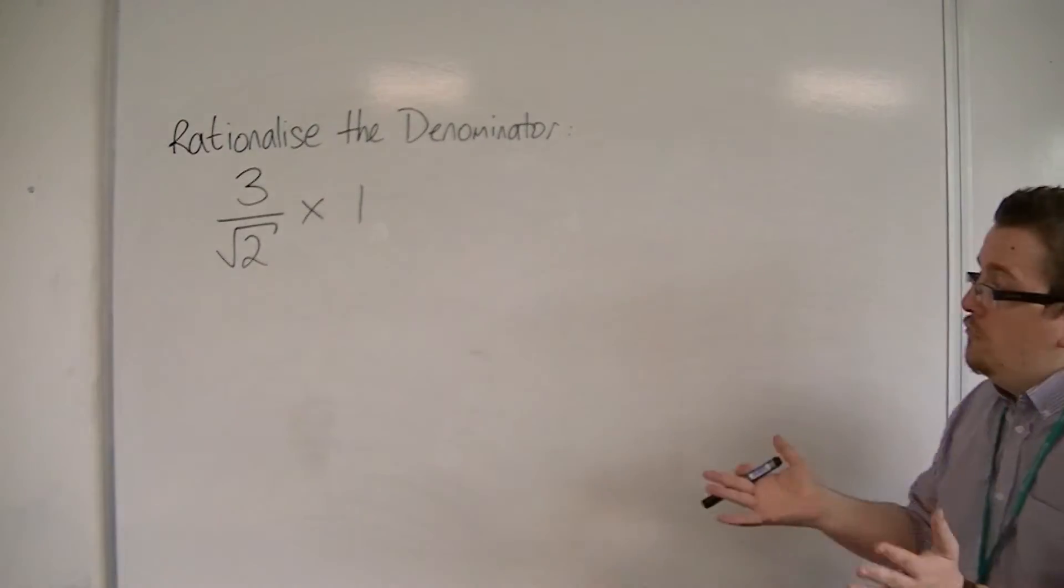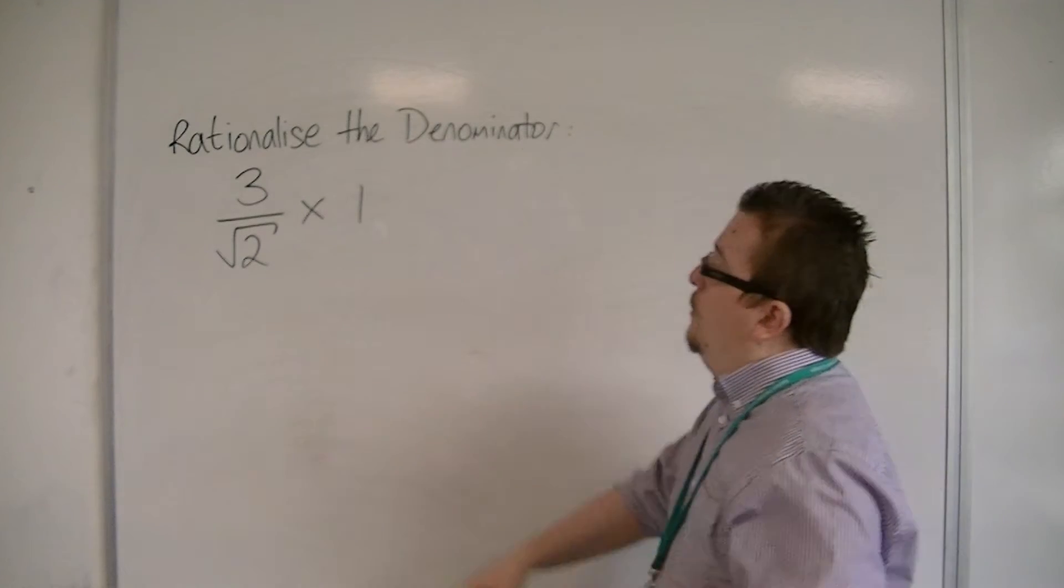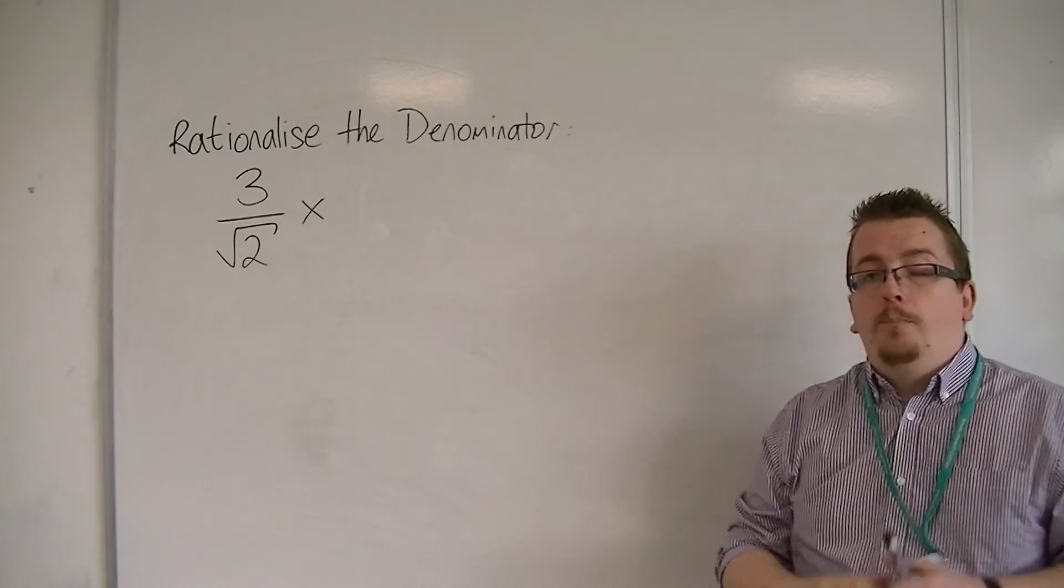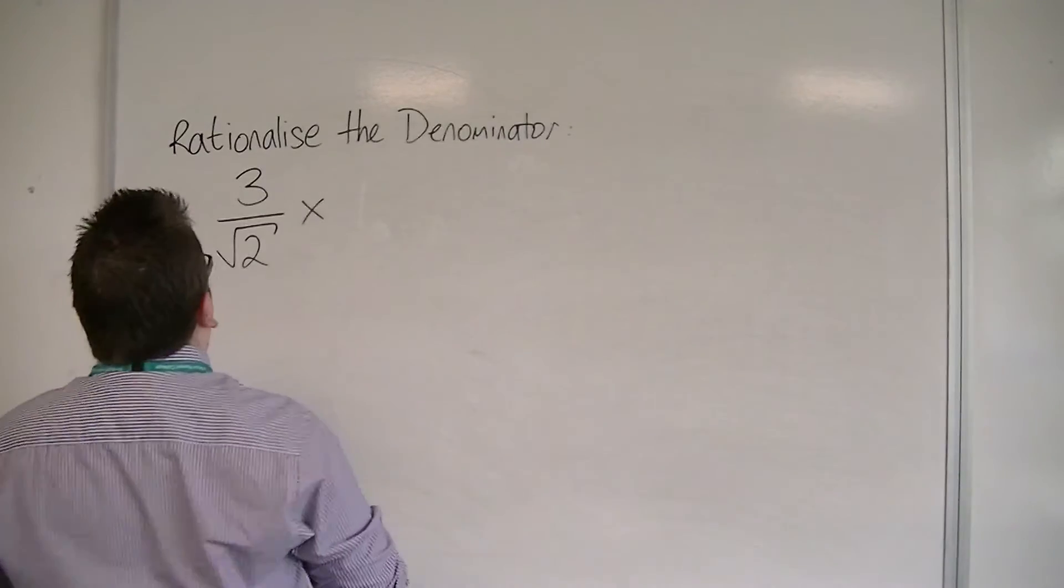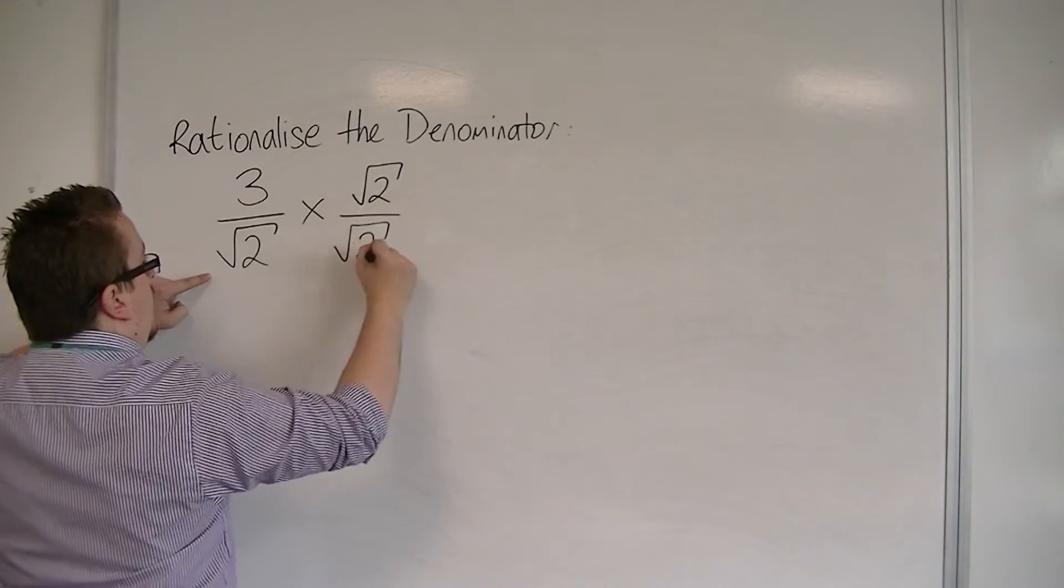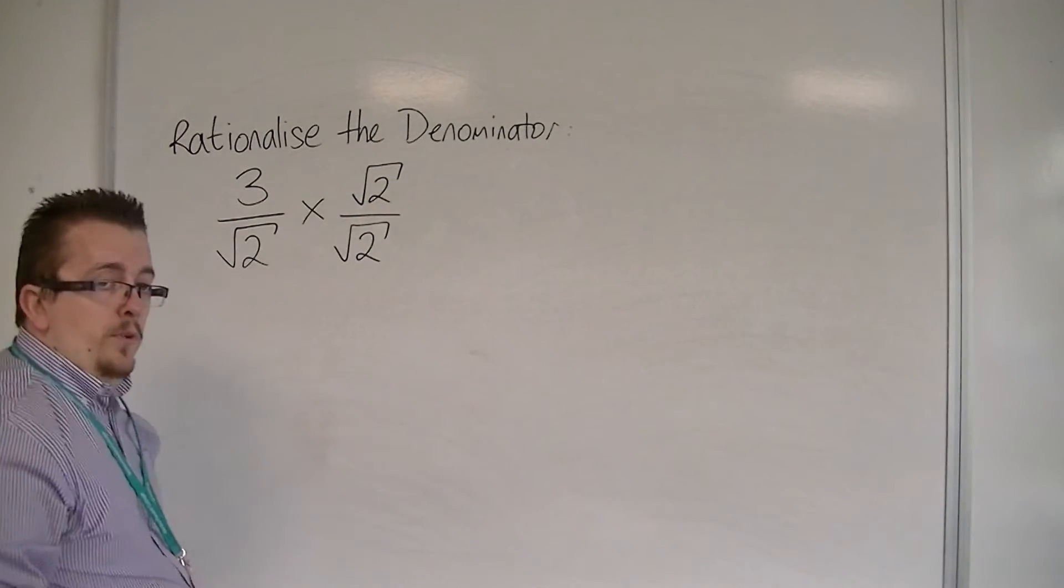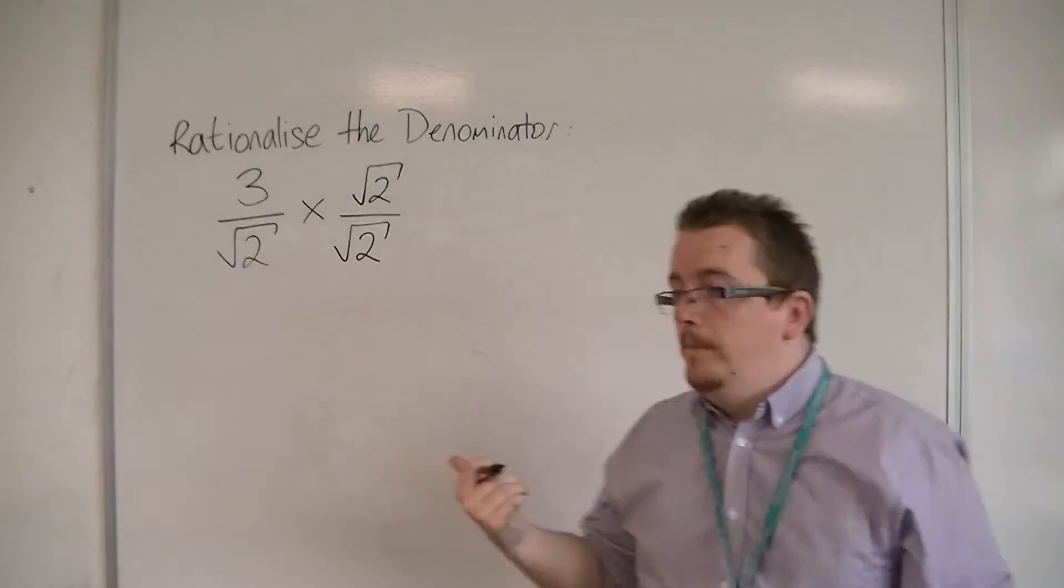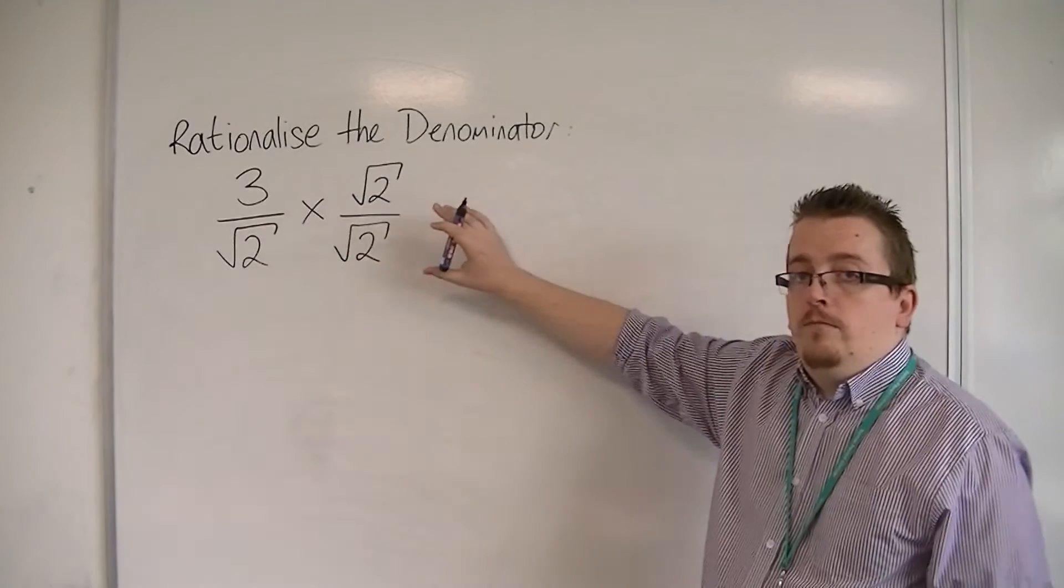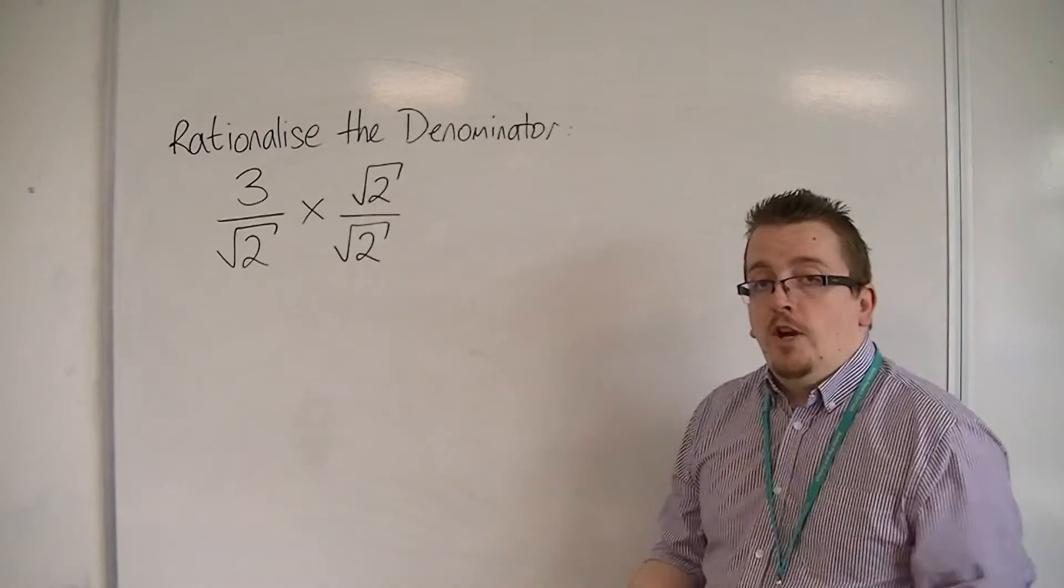Except, of course, 0 over 0. So if I change 1 to be a fraction where the numerator and the denominator are both square root of 2, the denominator that I'm given here, then this won't change the fraction. If I multiply by 1, I don't change the fraction.